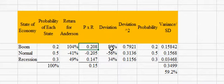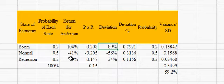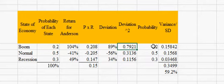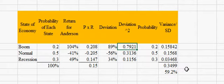The deviation is found first by taking the return of 104% less the overall expected return of 15%, which gives us 89. Negative 41 minus 15 gives us negative 56, and so on. Then we take that and raise it to the power of 2, or square it. We then take it times the probabilities. So 0.7921 times 0.2 gives us 0.15842. We do that for all three states of the economy, add them up, and 0.3499 represents the variance on Anderson. Then we find the square root to get the standard deviation.